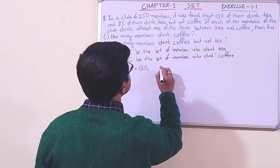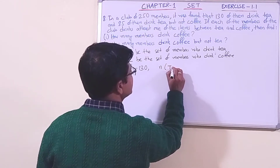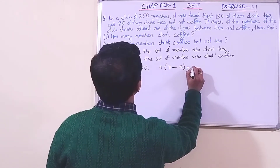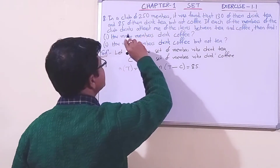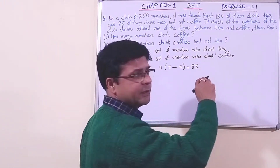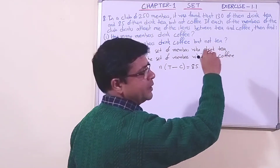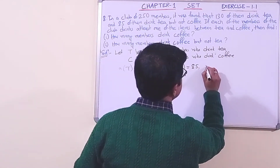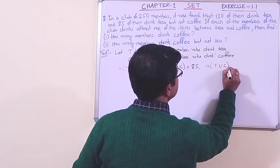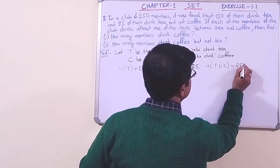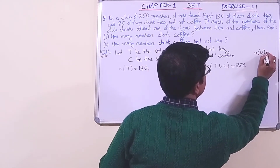85 of them drink tea but not coffee, so n(T - C) = 85. Now it is given that each of the members of the club drinks at least one of the items between tea and coffee, meaning the union is the total, that is n(T ∪ C) = 250.